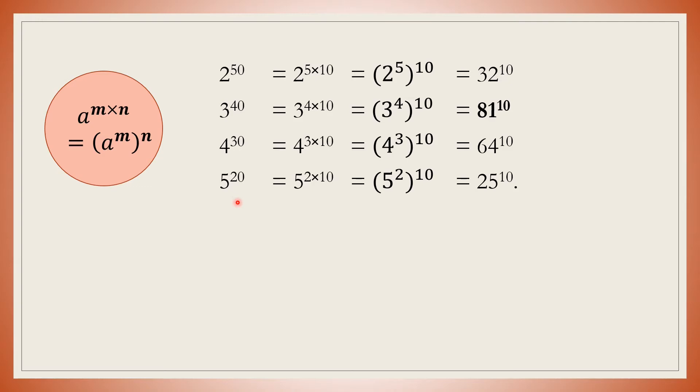Now, option D: 5 power 20 can be written as 5 power 2 into 10. This equals 5 power 2 the whole power 10, which in turn equals 25 power 10.